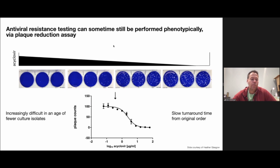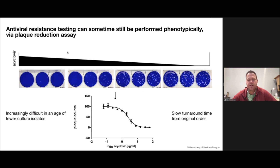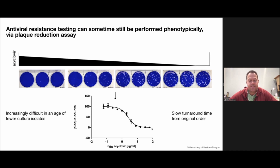What that means is you need a viral culture isolate from a swab or specimen, send that off to a reference lab, and they incubate it usually with acyclovir — but also possibly foscarnet or other drugs — in increasing amounts of drug. You basically get a titration curve of the antiviral effect and can calculate an EC50, with cutoffs for sensitivity or resistance.